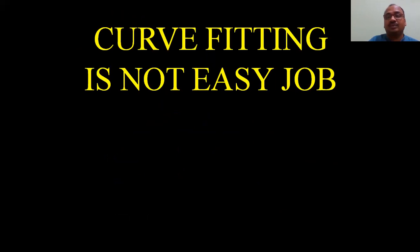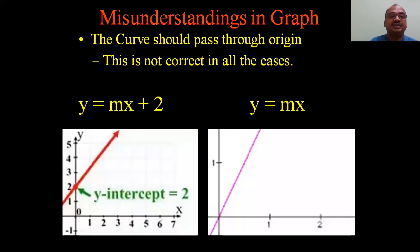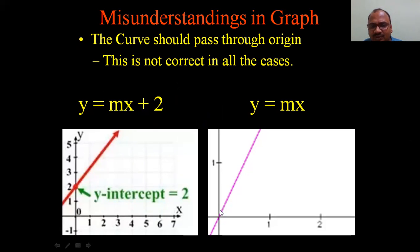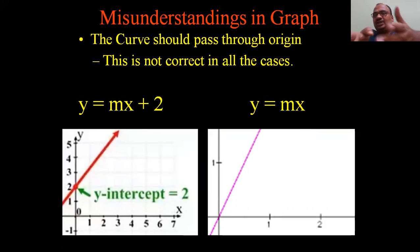Curve fitting is not an easy job — it is very difficult. There is a common misunderstanding that the curve must pass through the origin. Some students argue it must pass through the origin, but that is not possible in all cases. That's why we include the intercept c. When the curve does pass through zero, c becomes zero and the equation shortens to y = mx. Both forms are correct.